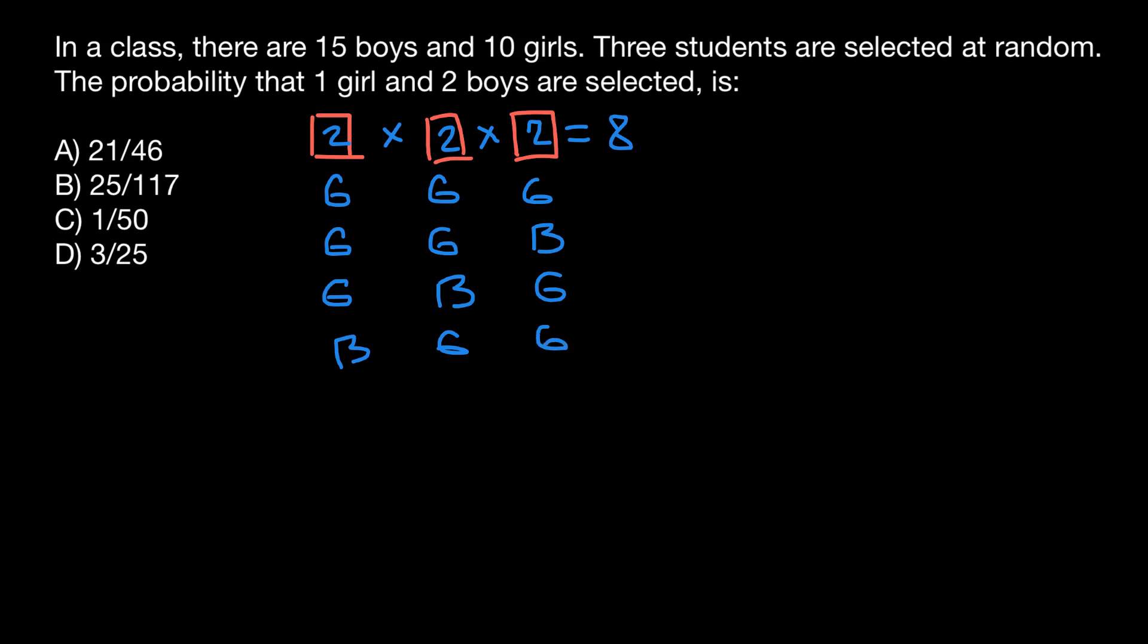We also may have two boys and one girl: boy, boy, and girl. A boy, girl, and boy. And a girl, a boy, and a boy. And the last combination would be all three would be boys: boy, boy, and a boy.